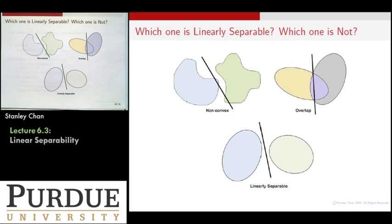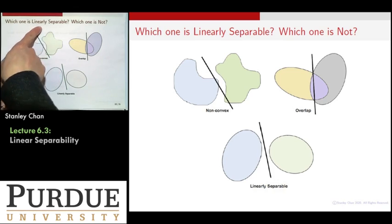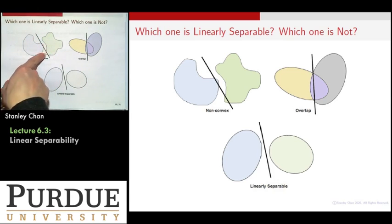Because it's non-convex, how can you find a good decision boundary? You need to find a curve that will go along this curvature so that you can cut it out. That is one difficulty.